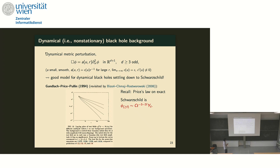Looking at the rates from Gundlach, Price, and Pullin for L equals 0, 1, 2, 3 — they read off minus 2.77, minus 3.95, minus 5.94, minus 8.34 — as opposed to the Price's Law rates of minus 3, 5, 7, 9. The L=1 result is definitely more like 4 than 5, L=2 is more like 6 than 7, and so on. This was already seen in the numerics from the 90s and was revisited in the 2000s by Bizon, Chmaj, and Rostworowski, who emphasized this difference.